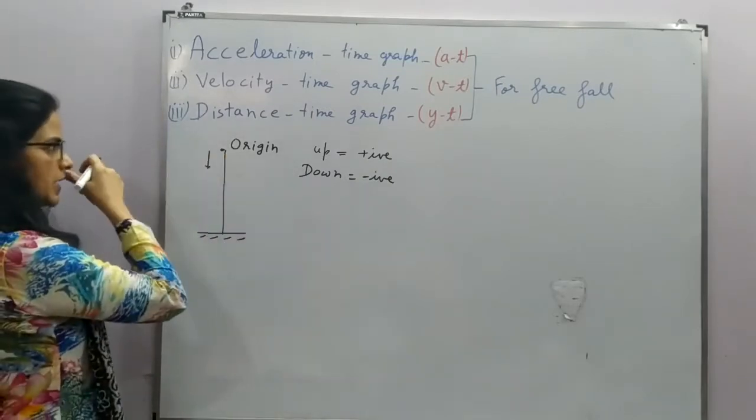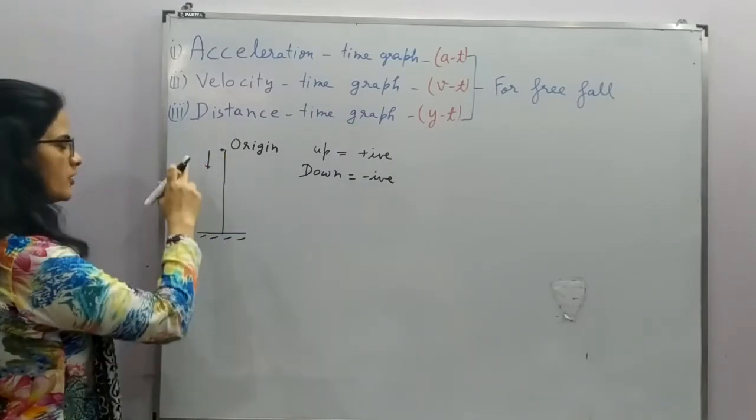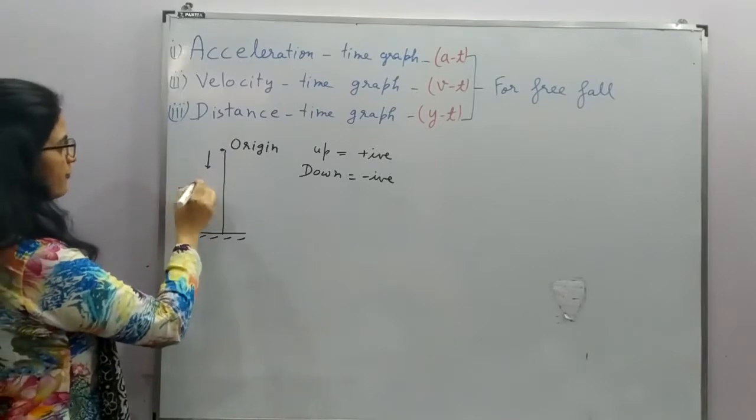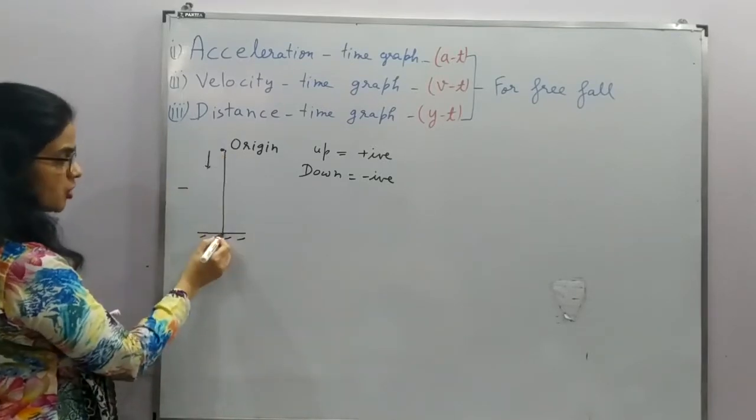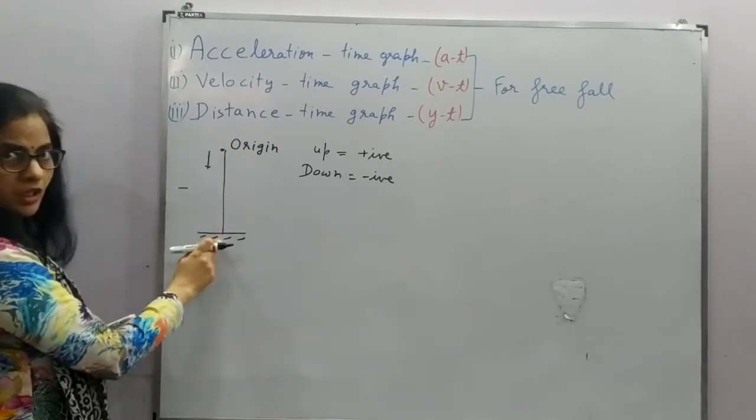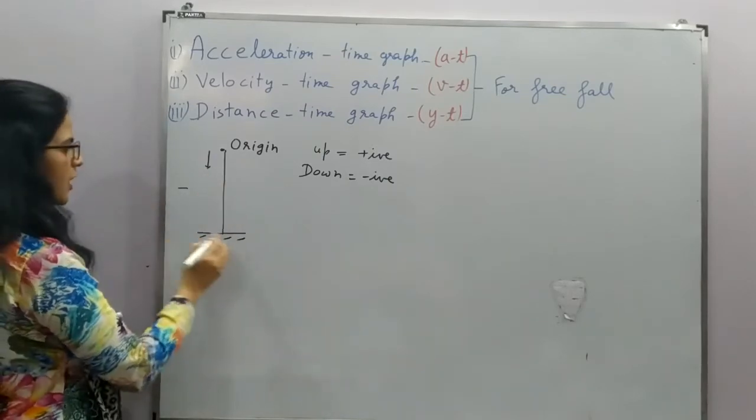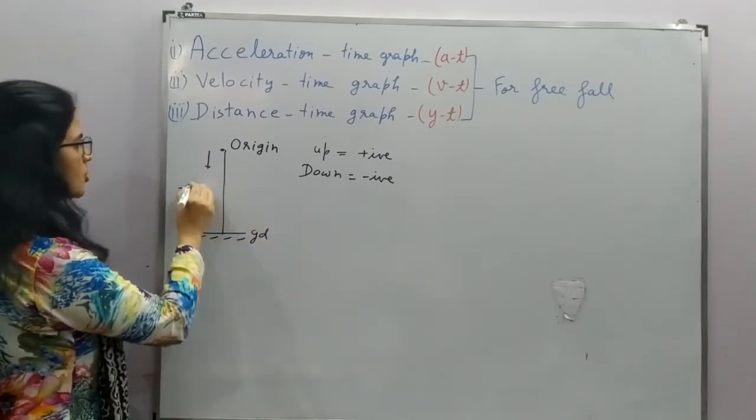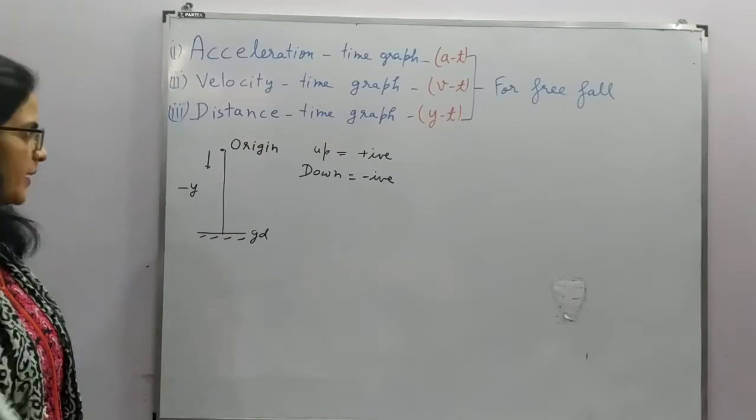So if we consider this as origin, so this will be a down motion. So you can say, if we discuss the position of this ball, where it reaches the ground, this position will be minus y.